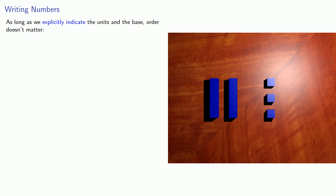Now as long as we explicitly indicate the units and the base, order doesn't matter. Here we have 2 medium and 3 small, and that's writing it in base 5. We could also describe this as 3 small and 2 medium, base 5.